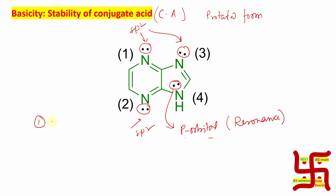It can participate in delocalization because it is in a p orbital. Recall Hückel's rule: rule 1 is cyclic, rule 2 is planar, rule 3 is conjugated, and every atom has a p orbital. This part is a 5-membered ring — imidazole type, although it is not an imidazole. This ring is aromatic because of this lone pair being under conjugation. So I believe you have understood.